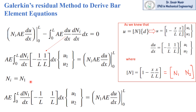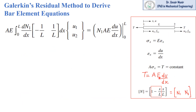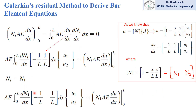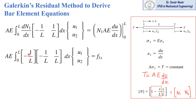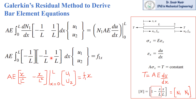We have two shape functions and will solve this equation with respect to N_1. We know that N_1 is equal to 1 minus x over L. So delta_N over delta_x means we differentiate N_1 with respect to x and put its value into the equation. After differentiating N_1 with respect to x, we will multiply these two matrices and integrate with respect to x.